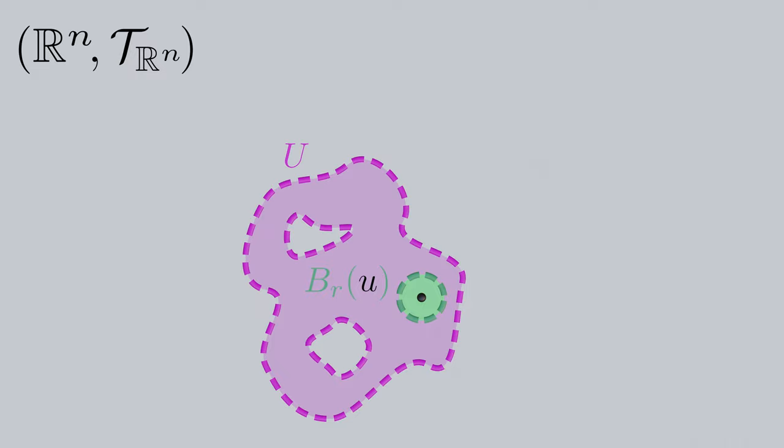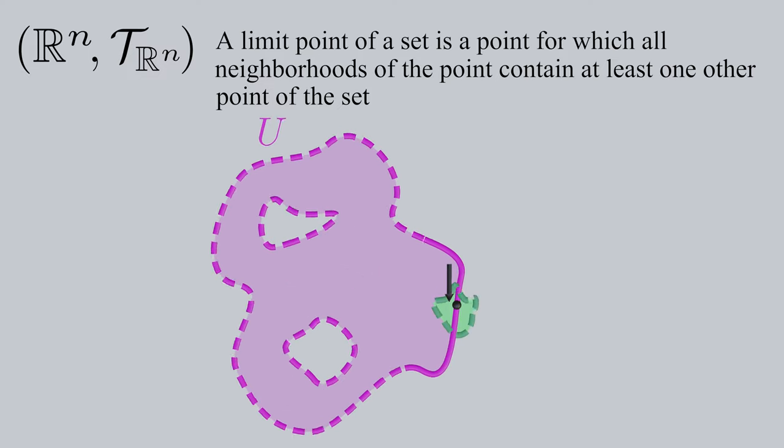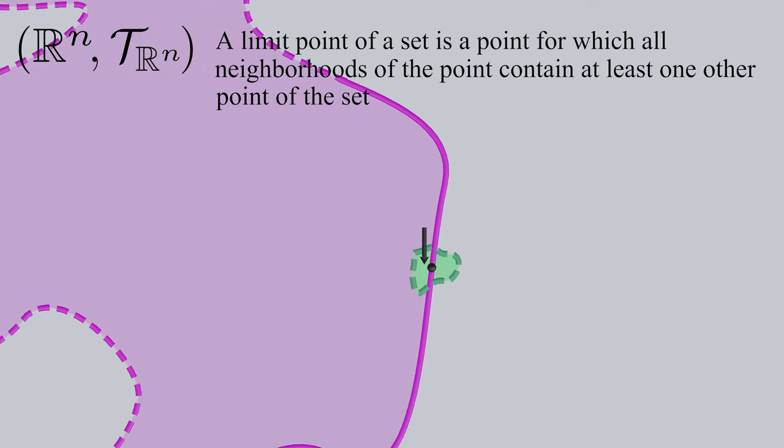A limit point of a set is a point for which all neighborhoods of the point contain at least one other point of the set. So even though they're outside of U, they're limit points of U because any open subset about one of these points will always contain an element of U, regardless of size or shape.